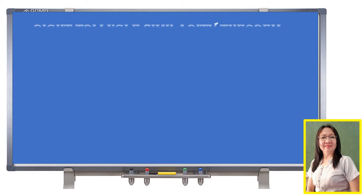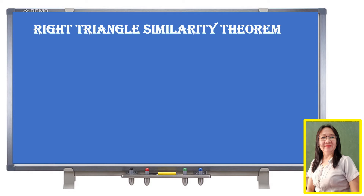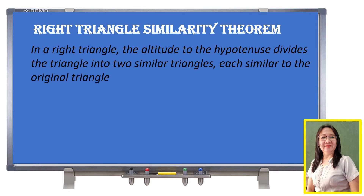To start, let us describe the right triangle similarity theorem. In a right triangle, the altitude to the hypotenuse divides the triangle into two similar triangles, each similar to the original triangle.